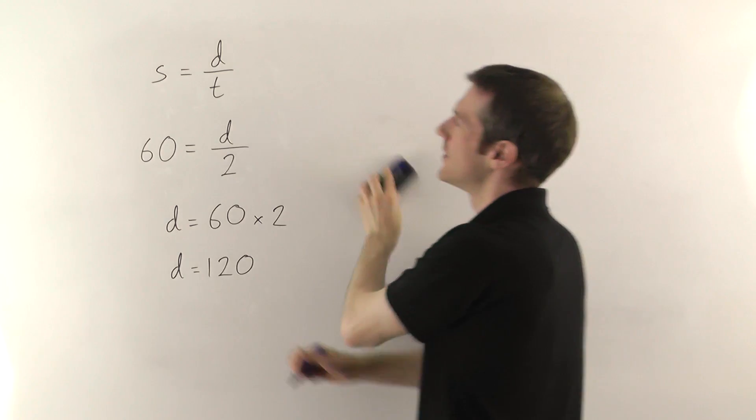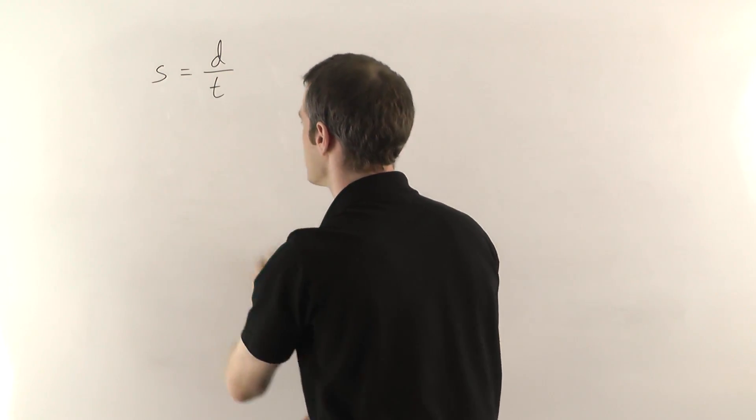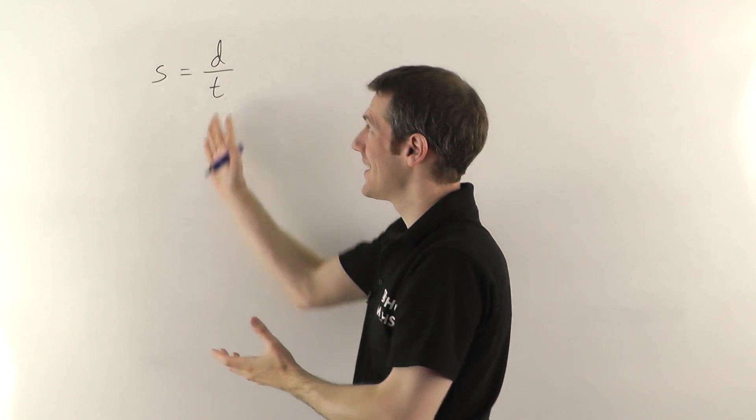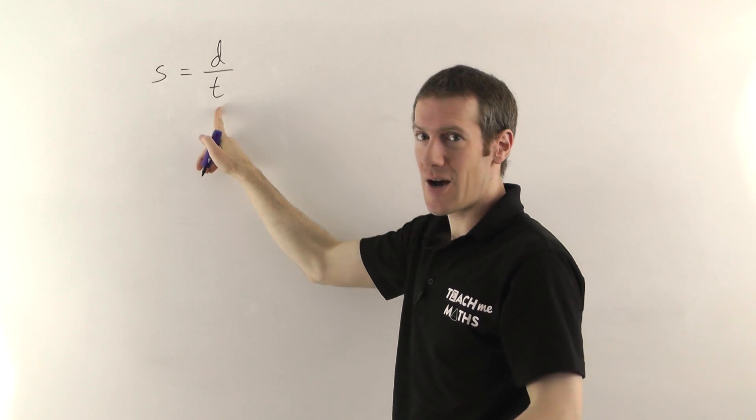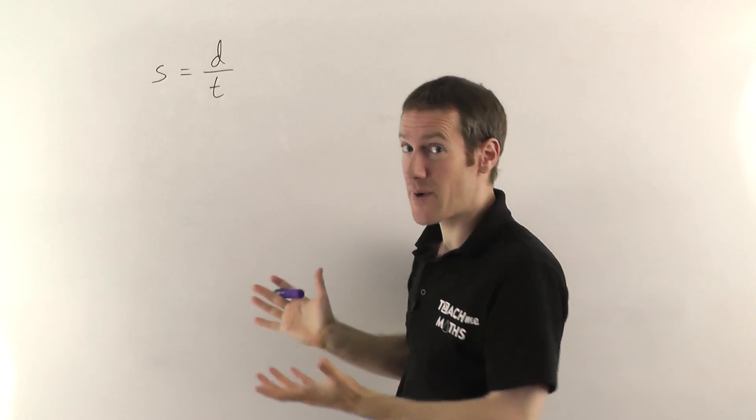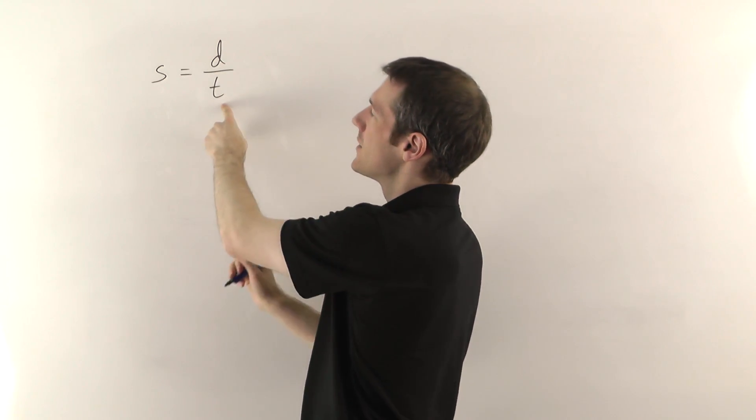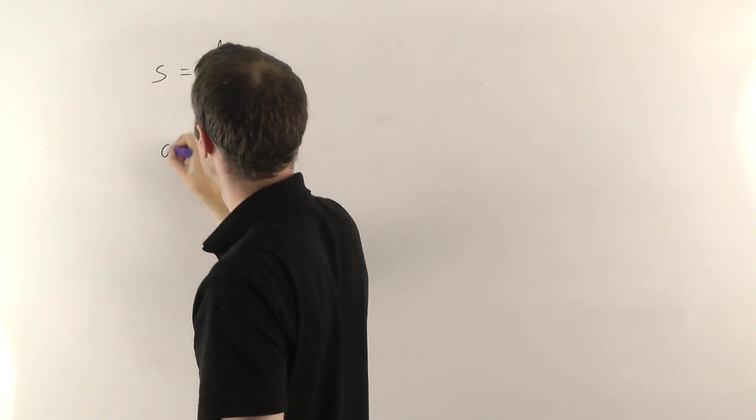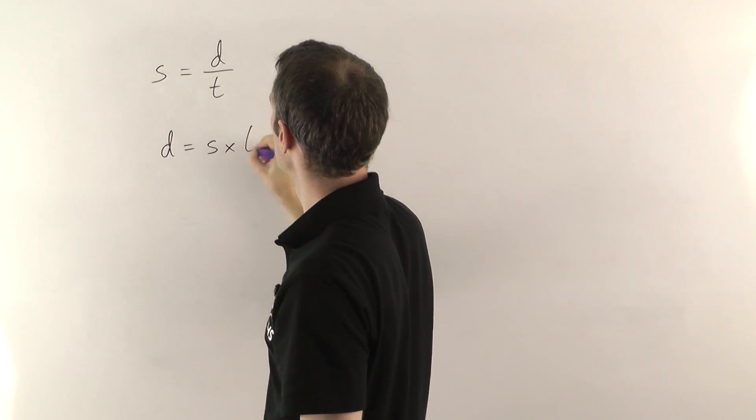So if we go back to our original speed is distance over time equation I could solve the equation like this. I want to get the D by itself. I don't know what the S and the T are but they're just going to be numbers that I'm going to get from my experiment. So I do the same thing. I want the distance by itself, I'm going to times both sides by the time and if I flip it round again the distance will be the speed times the time.